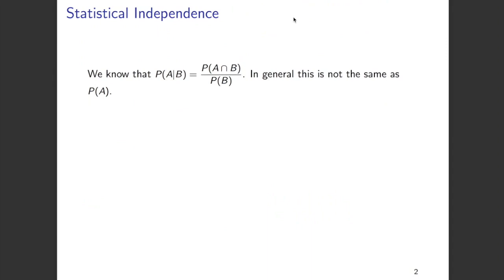In this video, we're going to talk about statistical independence. From our previous videos, we know conditional probability — that is, probability of A given B — which is given by probability of A intersection B divided by the probability of B. In general, this is not the same as probability of A.